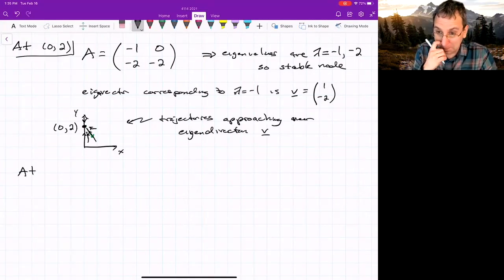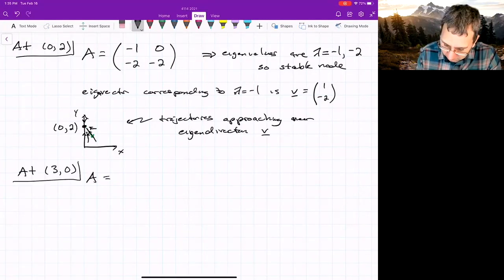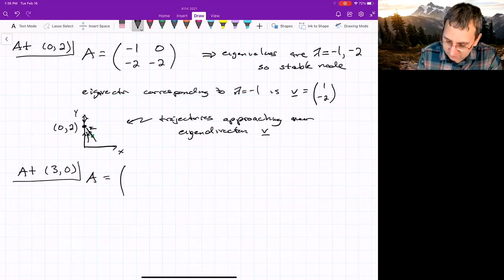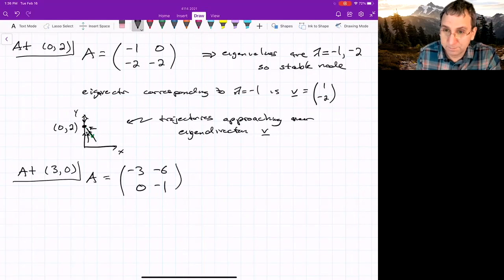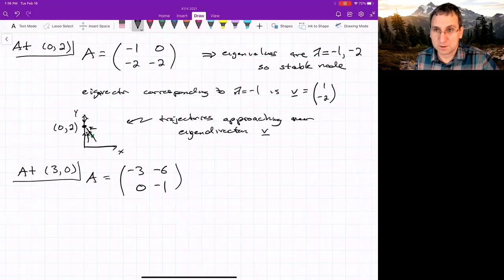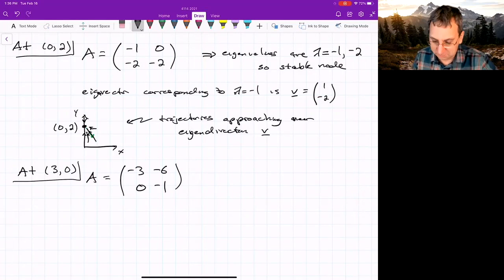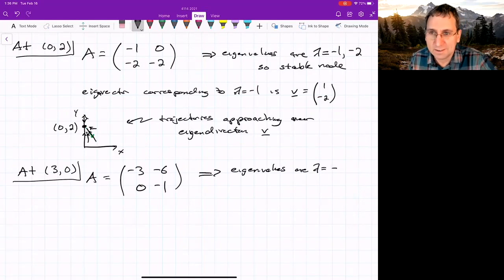(3,0). What's the Jacobian matrix? It's (-3, -6, 0, -1). So that means we have eigenvalues, right? We can just read off the eigenvalues because we have an upper triangular matrix. Just like this other one, we had a lower triangular matrix. So eigenvalues are, we could just read them off. It's -3 and -1.